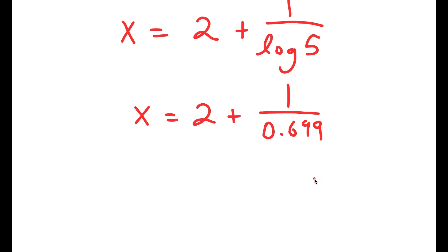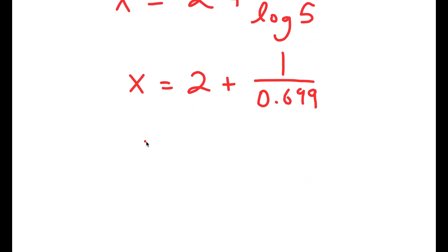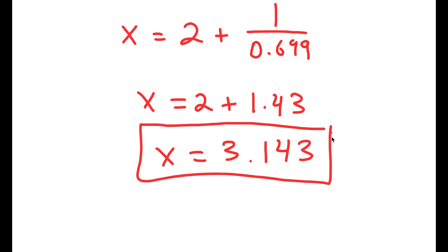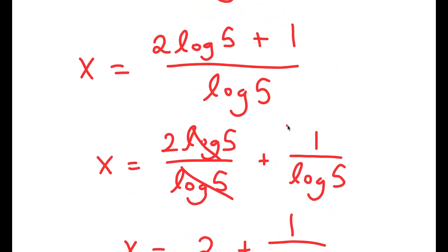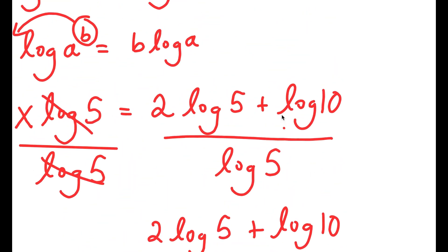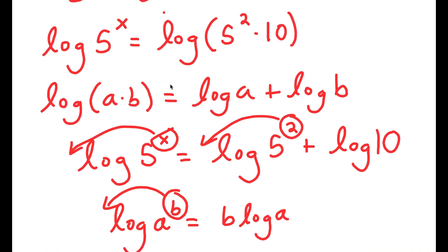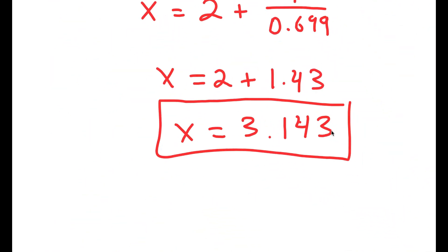So 1 divided by log 5 is going to equal approximately 1.43. Therefore, 2 plus 1.43 is 3.43, giving x is equal to approximately 3.43. And remember, we already said that x was going to be somewhere in between 3 and 4, so this proves us right.